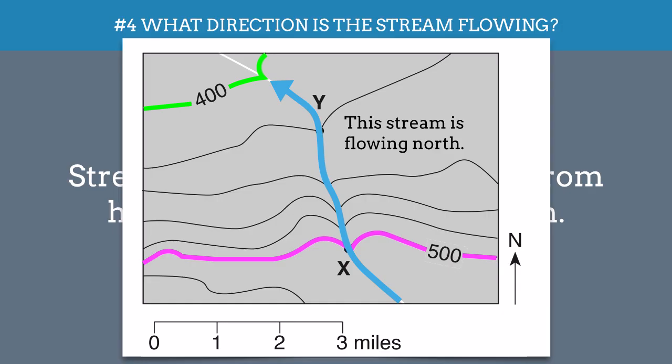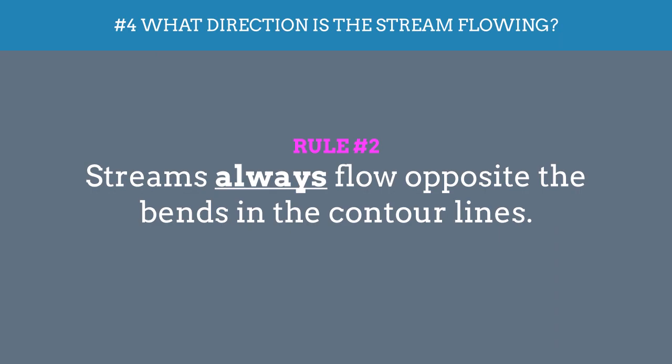But we're also going to run into scenarios where we don't have labeled contours, and so we have to follow rule two, which is that streams always will flow opposite the bends found in contour lines.